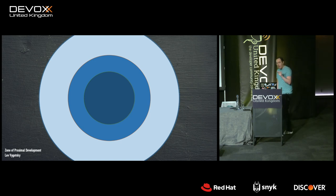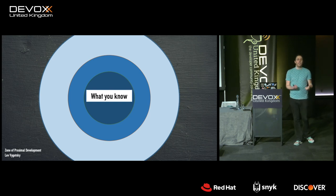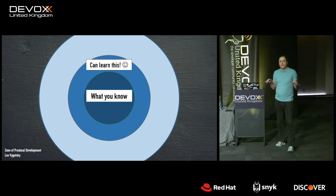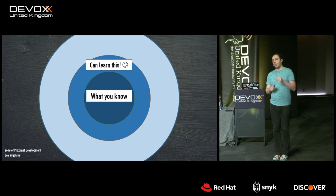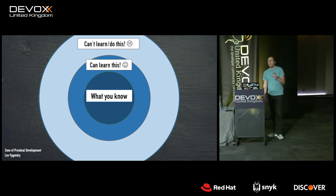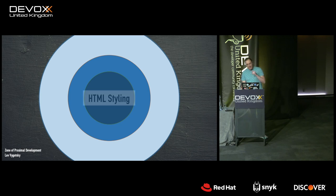Outside that inner circle is another smaller concentric circle — those are things you're capable of learning at this point, because with some prerequisite knowledge you can take the next step. But if you go too far, you have things you can't learn or do yet. For example: if you know HTML styling, you can probably learn CSS because that's moving styles to a separate file. But you can't learn CSS animations yet because that's just too far.